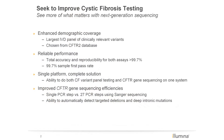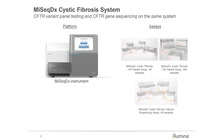The benefits of bringing next-generation sequencing to the CF testing market is that you can efficiently and reliably see more of the data that matters. Through enhanced demographic coverage, you can reduce the fear of missing clinically relevant variants in diverse populations by using a variant panel that includes 139 clinically relevant functionally verified variants as defined by the CFTR2 database. This system has best-in-class performance with total accuracy and reproducibility greater than 99.7% and a 0.3% repeat rate.